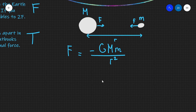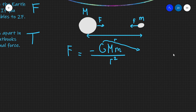In mathematical form, the law looks like this: F equals minus G times M times m divided by r squared. Here, r is the separation, M is one of the masses, lowercase m is the other mass, and G is the gravitational constant — a very small number with a magnitude of 6.67 times 10 to the power of minus 11.